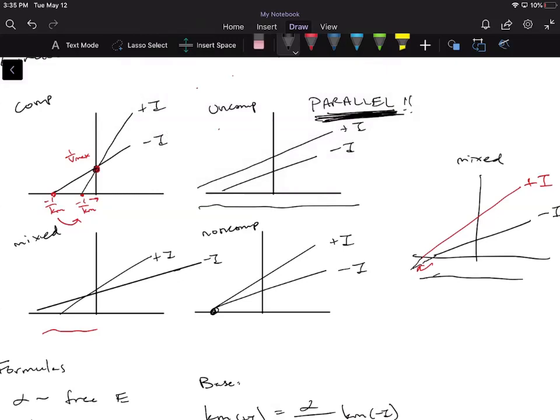So that's why it's very important to draw out your curves correctly, because if you're off by a little bit, one line might look like it's parallel but it's not exactly parallel. And that's the difference between a mixed and an uncompetitive inhibitor. So make sure you draw your lines correctly, and I'll go over the formulas in the next video.